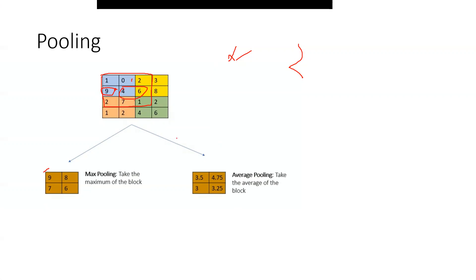That is maximum pooling. Average pooling, on the other hand, takes the average of the values in the region. The average of this particular range would be 3.7, and another range would be 4.75. Similarly for the other two sets of pixels — that is how we use max pooling and average pooling. With max pooling, we exactly find the most important feature, whereas with average pooling, we take an average and get somewhat of a blurred representation.